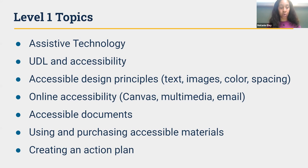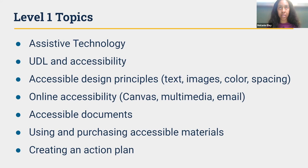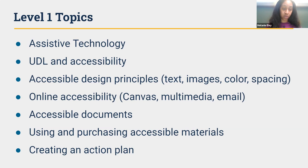The last part of Level 1 talks about creating an action plan and helping you focus on how to get started when it comes to creating your content. There's a lot of things that can be considered, but if you're new to accessibility, it's not always the expectation that you tackle everything all at once. That's where the action plan can come in and help you figure out your first step and how you can move forward with your planning and making sure that you're tackling accessibility in a way that's appropriate but also manageable for you.